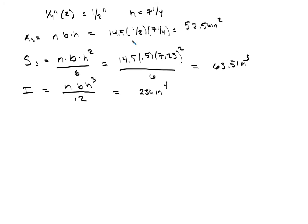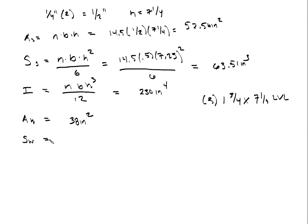For the wood, we have three LVLs, each 1¾ inch by 7¼ inch. Three of them give an area of 38 in². The section modulus of the wood is 46 in³, and the inertia of the wood is 166.7 in⁴.